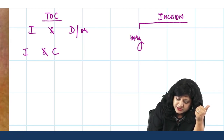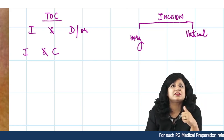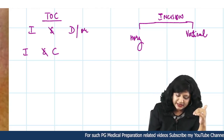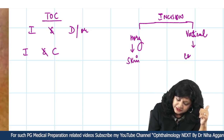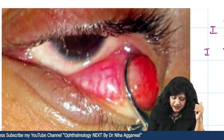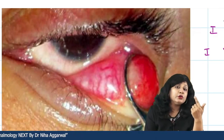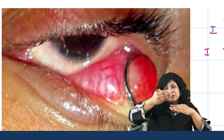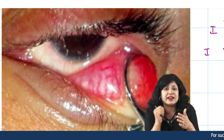The horizontal incision is given on the skin side, while the vertical incision is given on the conjunctival side. This means if you evert this eyelid, you can see the nodule, give an incision on the conjunctival side, and then give a vertical incision for its drainage.